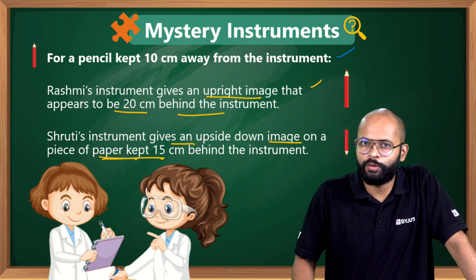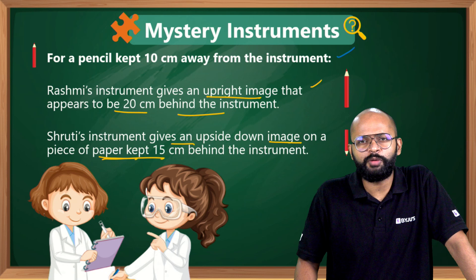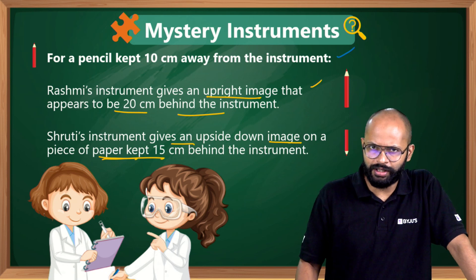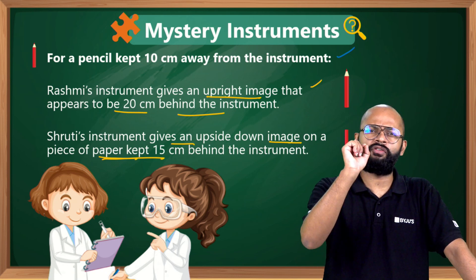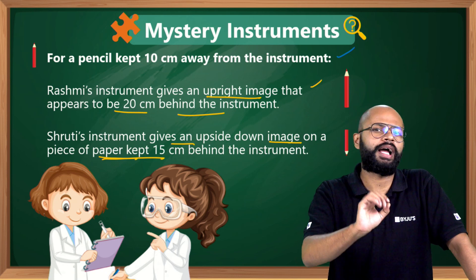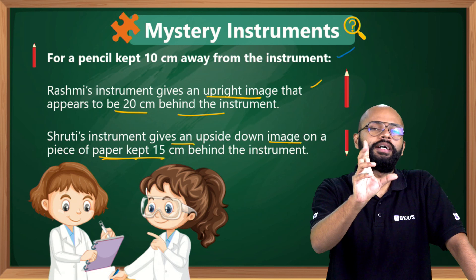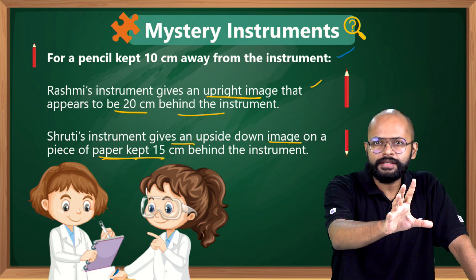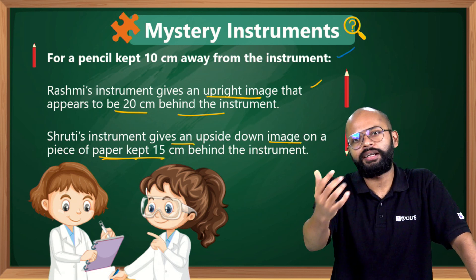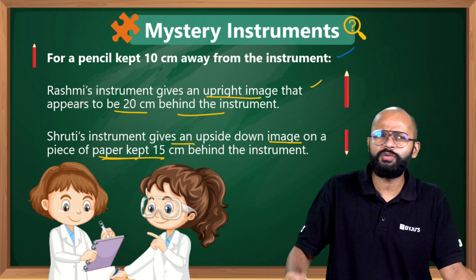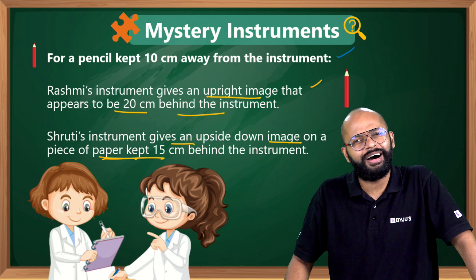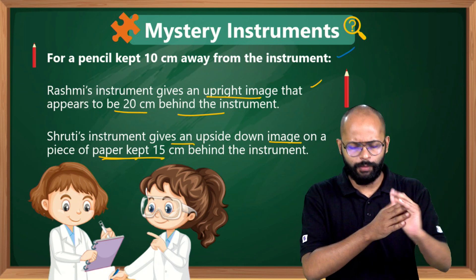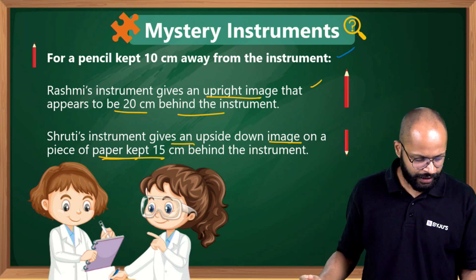Shruti's instrument gives an upside-down image — an inverted image — on a piece of paper, 15 centimeters behind the instrument. Every line here is giving you a clue. We'll solve both questions, but first let's have a quick recap of the mirror formula and the lens formula.